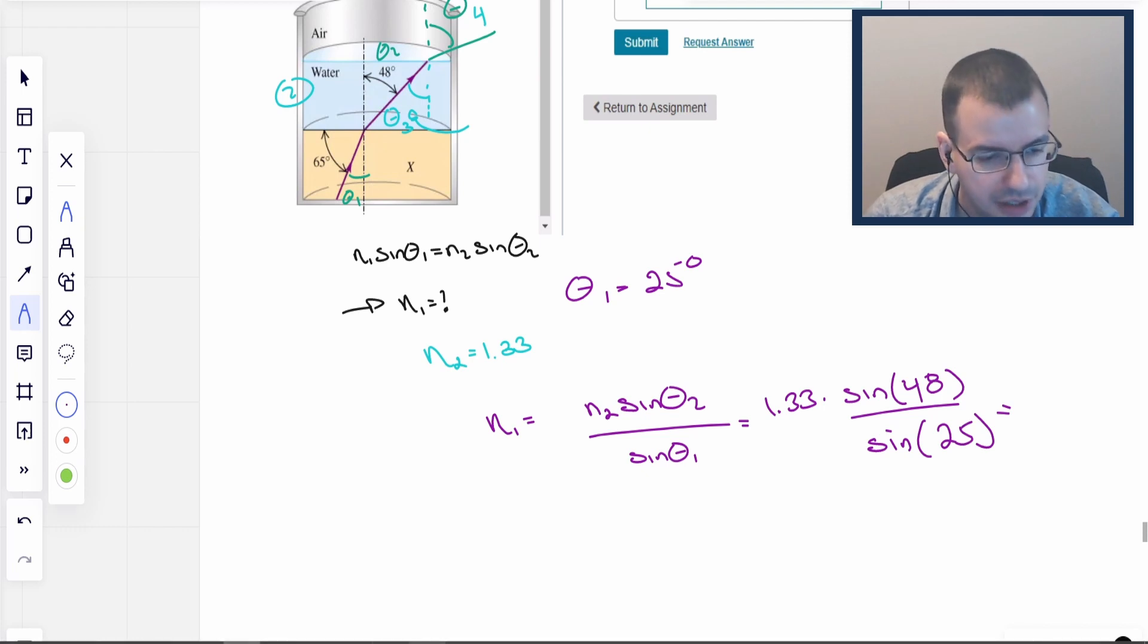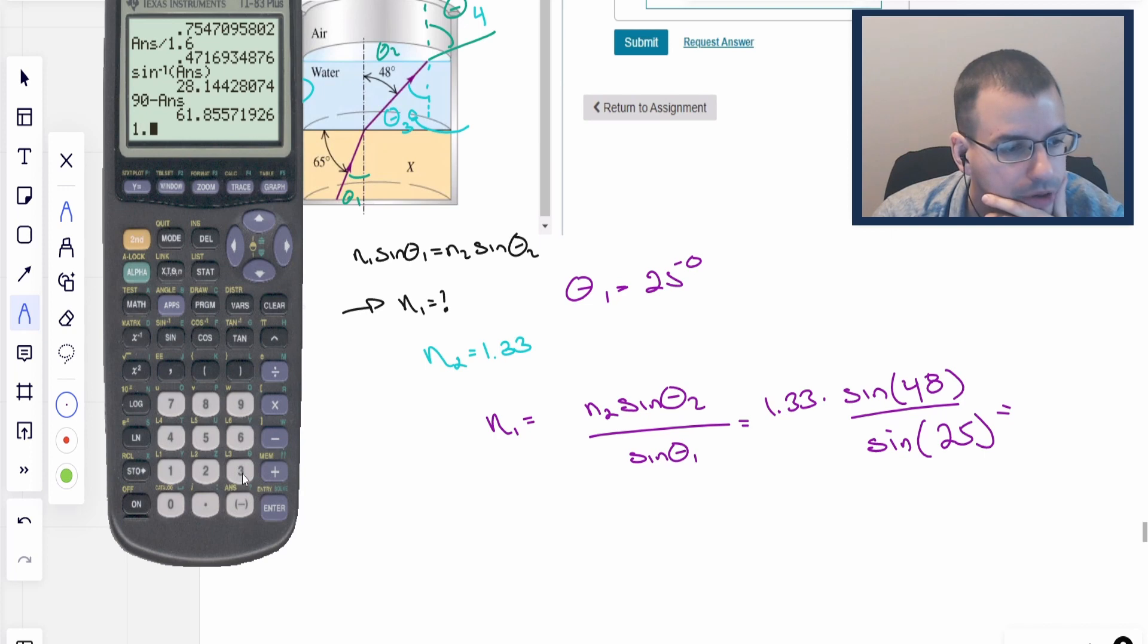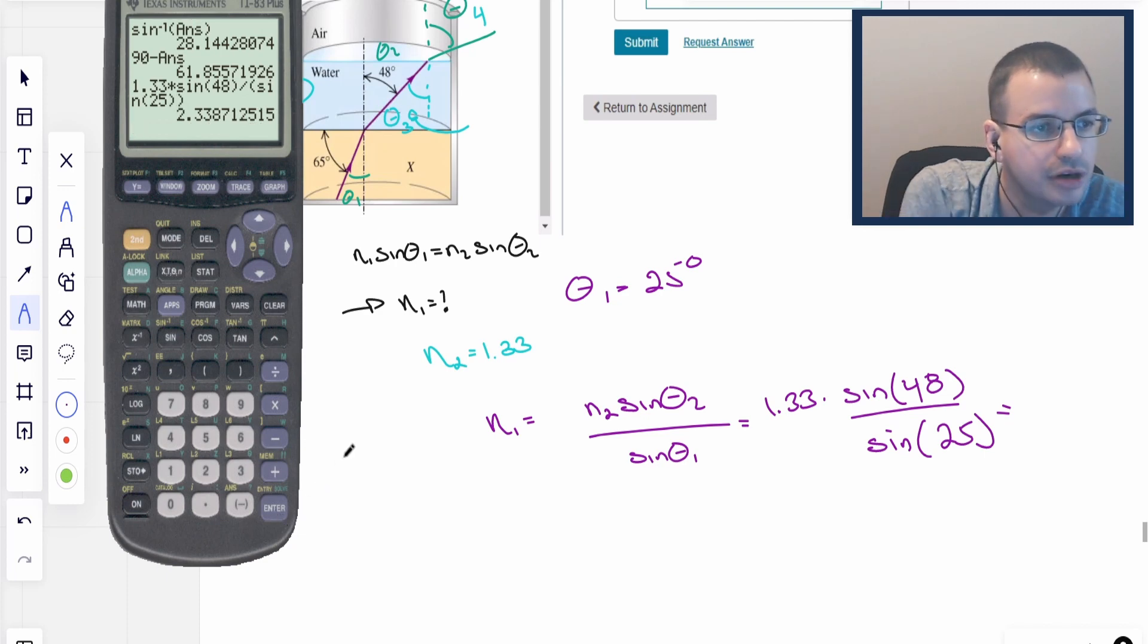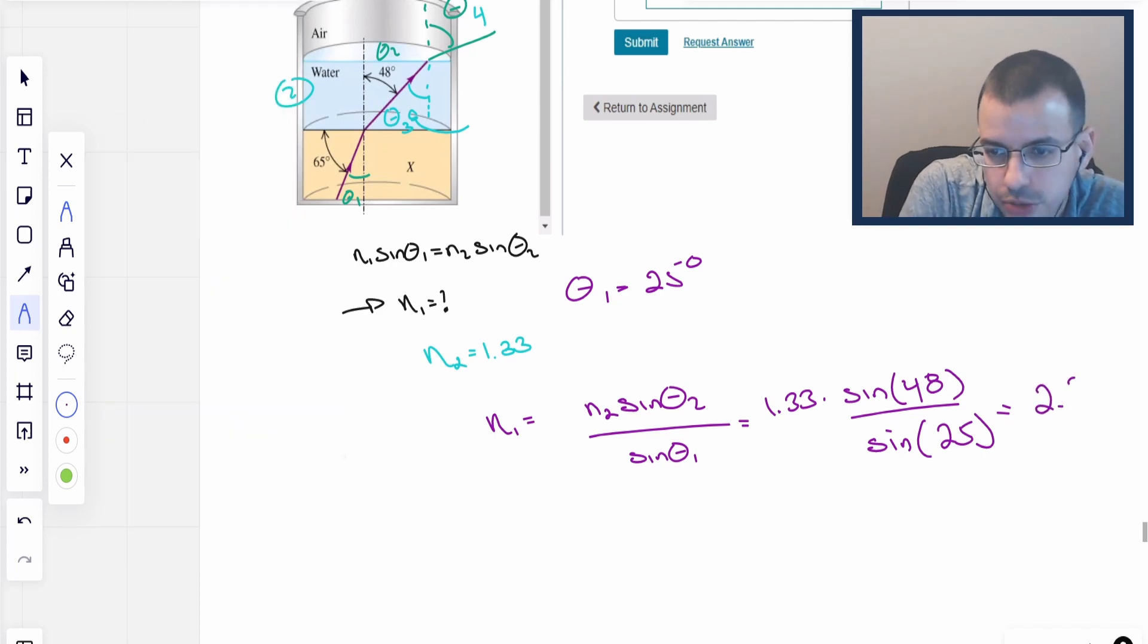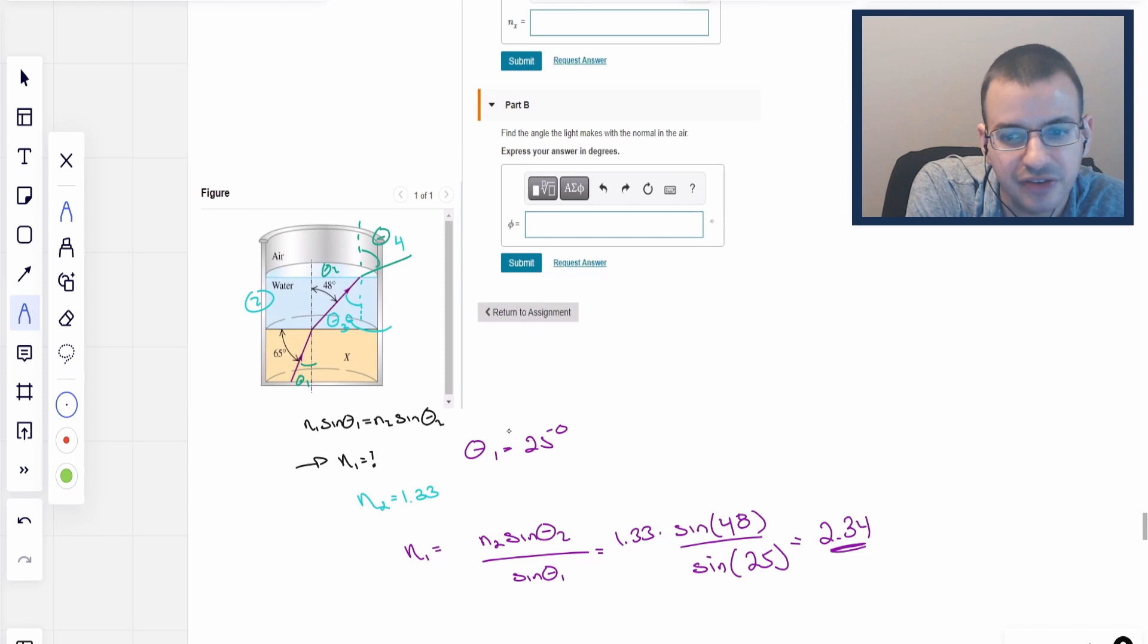Put that in the calculator. 1.33 times sine of 48, close parentheses, divided by sine of 25 degrees, close parentheses. This should give us 2.34. And that's going to be the index of refraction of X. So index of refraction of X is 2.34.